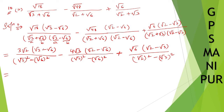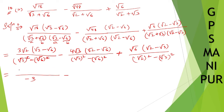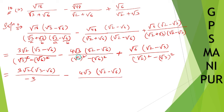Now multiply numerator into numerator. In the denominator, square and root cancel. For the first fraction, 3 minus 6 gives minus 3. For the second fraction, square and root cancel: 2 minus 6 gives minus 4. And for the third fraction, square and root cancel: 2 minus 3 gives minus 1.